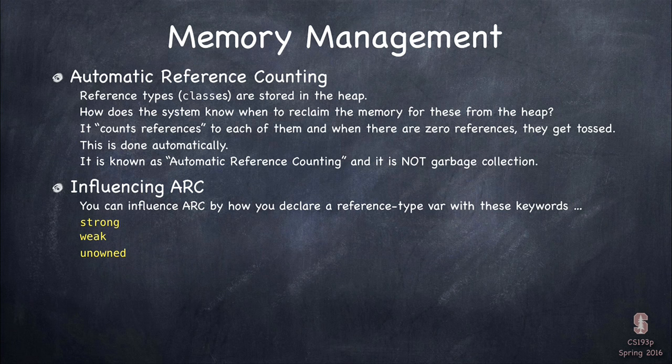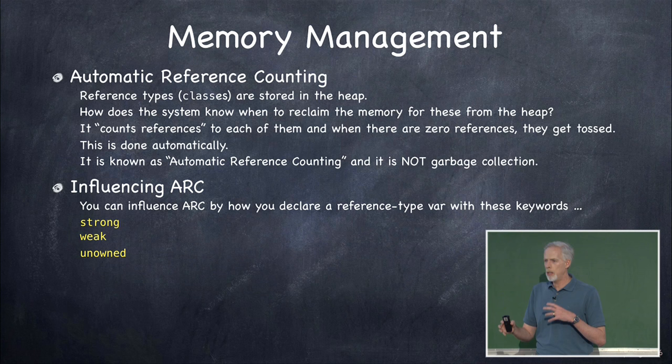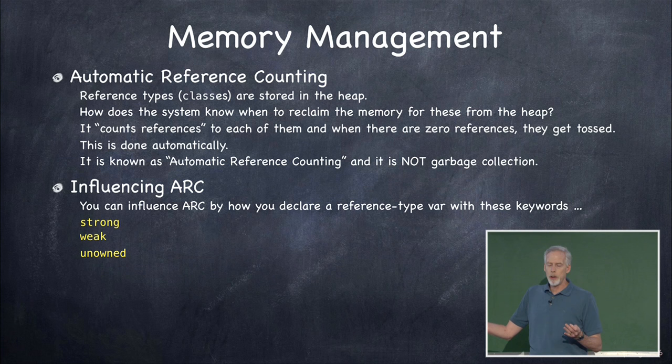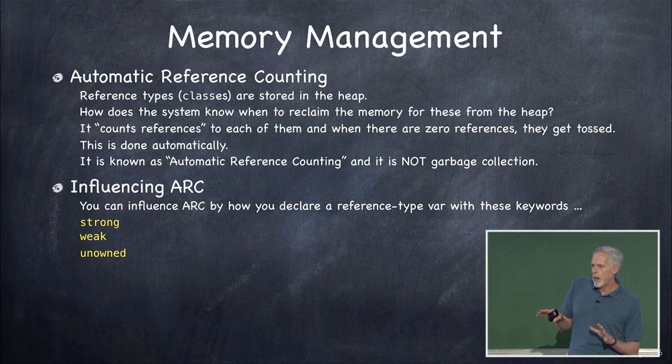First topic: memory management. Reference types, which are classes, live in the heap, and that memory is automatically taken care of for you. That's called automatic reference counting — it's a reference counting based scheme. It keeps track of how many pointers are pointing to something, and when that count goes to zero, it immediately frees it. This is different from garbage collection, where you mark and sweep through the heap. ARC is completely and utterly predictable.